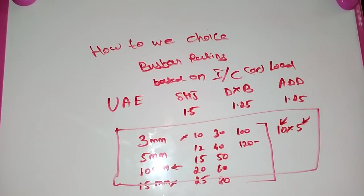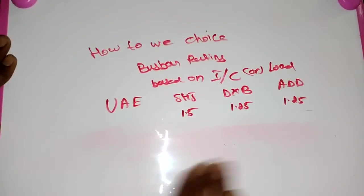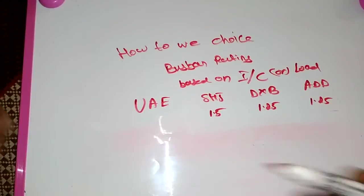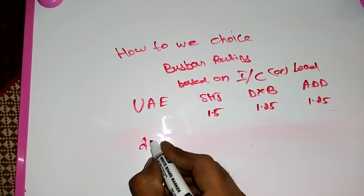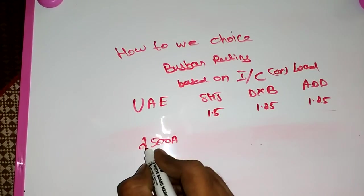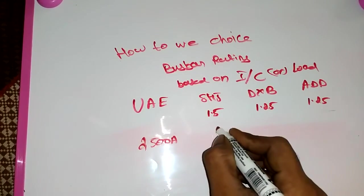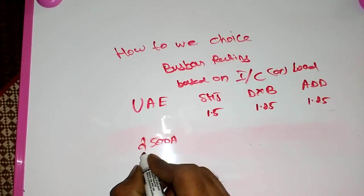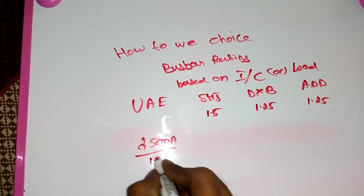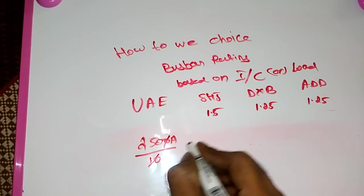After this, we are going to see how we choose the busbar rating based on incoming. First thing, we take one incoming rating. Just take for 2500 ampere. For example, we have a 2500 ampere incoming. We do some mathematical calculation. We have 2500 ampere, so mostly this is very high rating, so we go into 10mm busbar, so 10mm means 2500 by 10, we do 10 means 250mm.